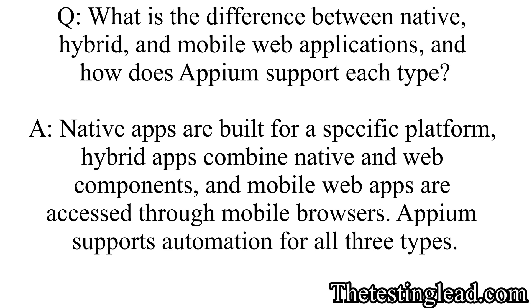What is the difference between native, hybrid, and mobile web applications, and how does Appium support each type? Native applications are built for a specific platform, hybrid apps combine native and web components, and mobile web apps are accessed through mobile browsers. Appium supports automation for all three types.